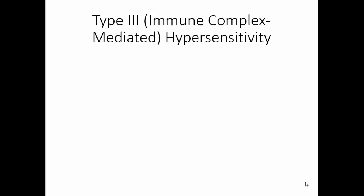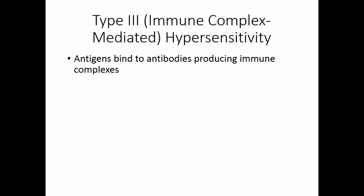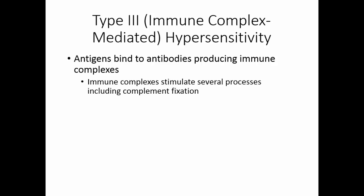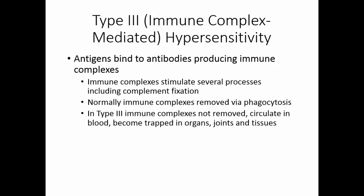Type 3 hypersensitivities are also known as immune complex-mediated hypersensitivities. Here, antigens bind to antibodies, producing immune complexes. Immune complexes can stimulate several processes, including complement fixation and phagocytosis, and other nonspecific defenses. Normally, immune complexes are removed from the bloodstream via phagocytosis. In type 3 hypersensitivity, the immune complexes are not removed fast enough. They continue to circulate in the blood, and they can become trapped in organs, joints, or tissues.